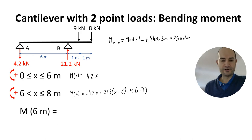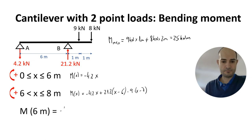If we calculate the moment for x equals 6 meters we get minus 4.2 times 6, that's minus 25.2 kN·m.